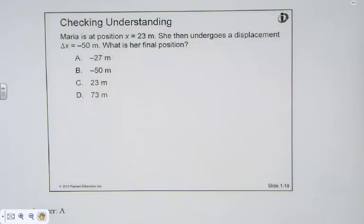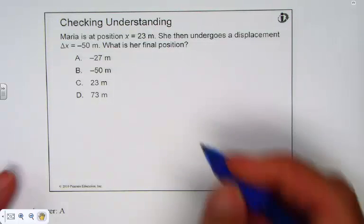Let's check for understanding. I'll read it through and you read with me. It's saying Maria is out of position, x equals 23. She undergoes a displacement of negative 50 meters. What's her final position? And friends, as we begin, model first, math second. Model first, math second. Let's create a coordinate system.